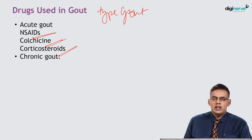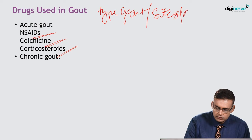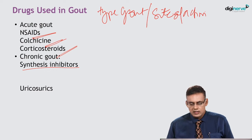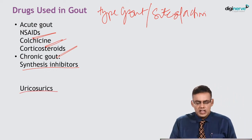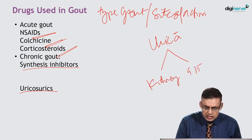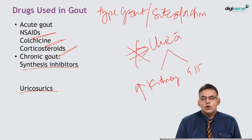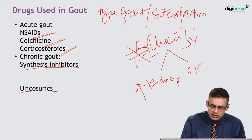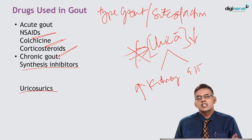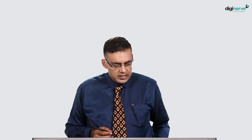Chronic gout has manifestations for a longer period of time. Here we can use two different types of drugs according to the site of action. One group inhibits the synthesis of uric acid, and the other increases the secretion of uric acid. Either we inhibit the formation or increase the excretion of uric acid — both will lower plasma uric acid concentration and prevent tophi accumulation in tissues. Drugs inhibiting synthesis are allopurinol and febuxostat; uricosuric agents used are probenecid and sulfinpyrazone.